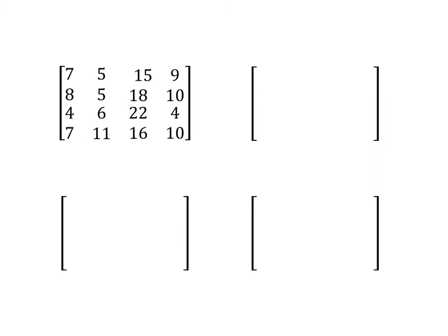We have here the values just put into matrix form. The first step of our Hungarian algorithm is to subtract the smallest number from each row. In our first row, the smallest number is 5. Our second row, again the smallest number is 5. The third row, the smallest number is 4. And the fourth row, the smallest number is 7. That would make our top row 2, 0, 10, and 4. The second row, 3, 0, 13, and 5. The third row, 0, 2, 18, and 0. Last row, 0, 4, 9, and 3.